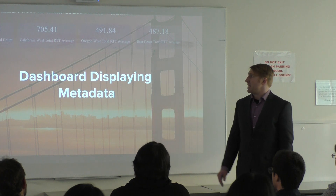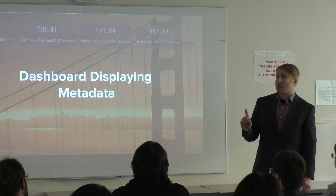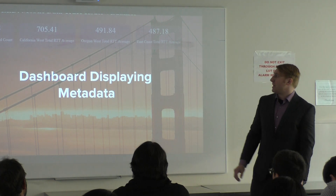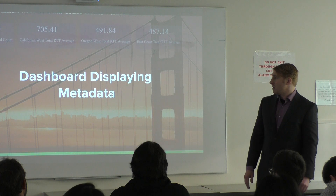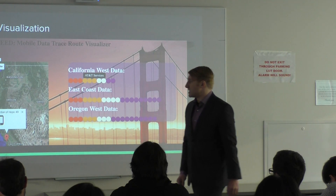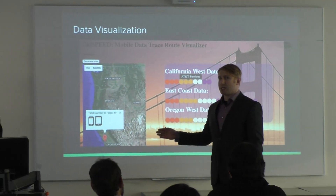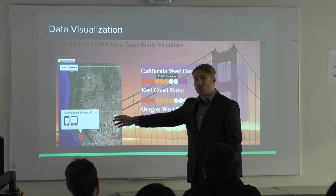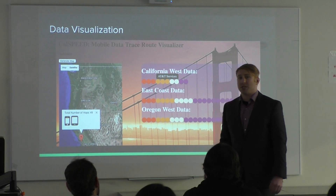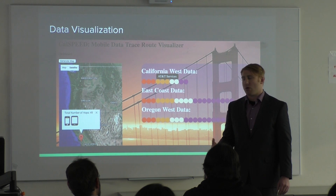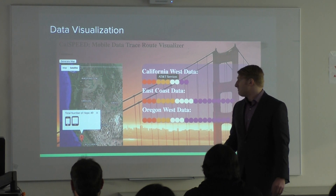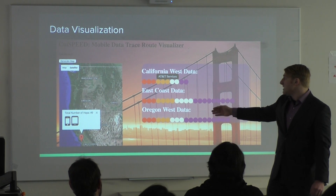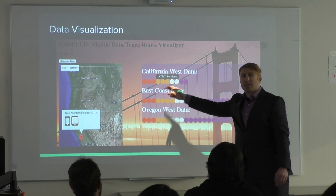Here we have a dashboard display using metadata. Up top, you can see we have a trace route record count. This is for one instance of one data set. We have three different servers that we're pinging on each data set: California West, Oregon West, and East Coast. To walk you through our visualization, when the person uploads their files, it will contain data with geographical points, which would be plotted using the Maps API. From there, they can select an individual test, and then select whether it's a mobile device such as a cell phone or a tablet. From there, we can generate three plots showing each server — California, East Coast, and Oregon — being pinged, along with each trace route hop in between, with each different service provider shown in a different color.